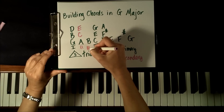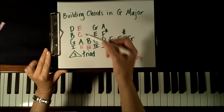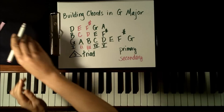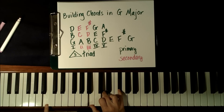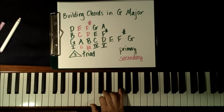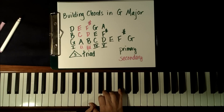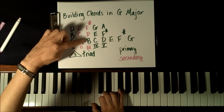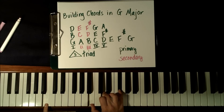The next chord we can build in the key of G major is the III chord. This one will use the notes B, D, and F sharp. Again, we'll find those notes on the piano — B, D, and F sharp — and we'll find the root in the left hand. I'm showing you all of these chords in root position. What that means is the bottom note names the chord. So when I'm playing the III chord in G major, the bottom note is B. If I'm playing this chord with B on the bottom, I call this root position. There are two other positions: one with D on the bottom, and one with F sharp on the bottom.